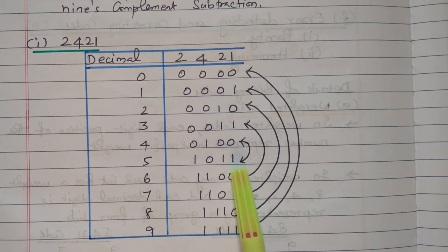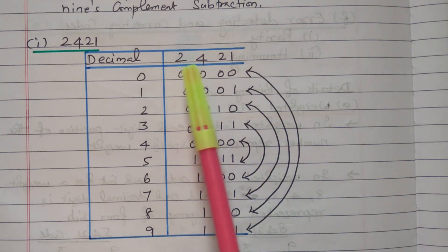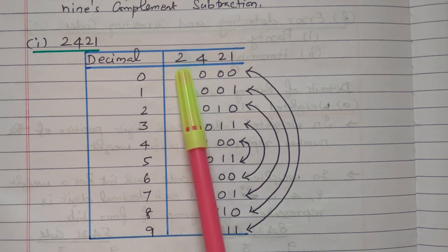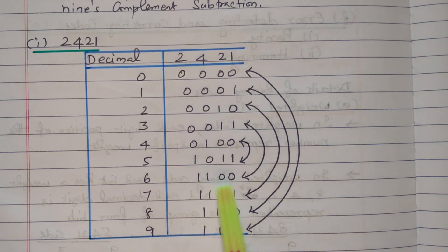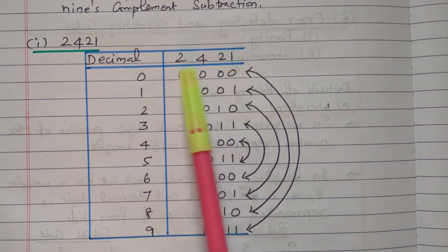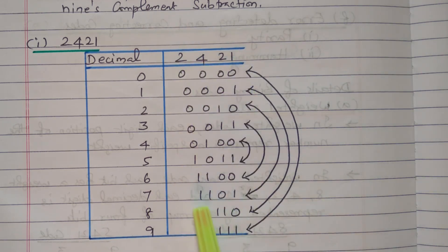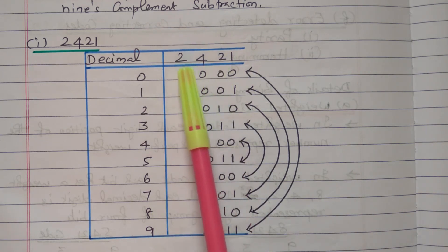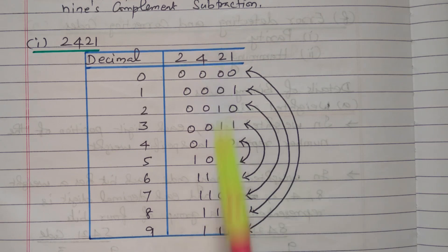Here first, third, and fourth positions are made one so two plus two is four, four plus one is five. For six, the first and second positions: two plus four is six — code is 1,1,0,0. For seven, first, second, and fourth positions: two plus four is six, six plus one is seven — code is 1,1,0,1. For eight, first, second, and third positions are made one: two plus four is six, six plus two is eight — code is 1,1,1,0. For nine, all positions are one: two plus four is six, six plus two is eight, eight plus one is nine — code is 1,1,1,1.